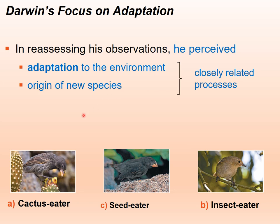Darwin noticed a higher percentage of cactus-eating finches on islands with a lot of cactus, a higher percentage of seed-eating finches on islands where seeds were the primary food source, and a higher percentage of insect-eating finches on islands with mainly insects. The difference between these finch types, if you look at their beaks, shows adaptation to the environment. Whatever food sources were in the environment allowed the ones that could utilize those food sources to survive and be able to reproduce.